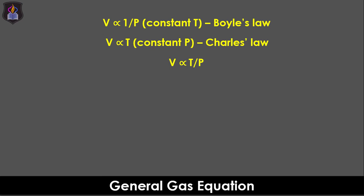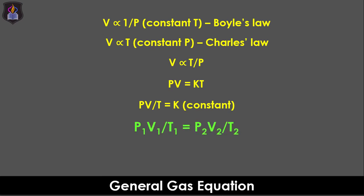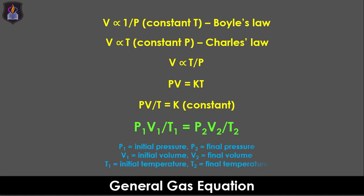When we introduce a proportionality constant, the combined law becomes PV equals kT. Rearrangement of the above equation shows that the ratio of the product of the volume and pressure of the gas to its temperature is constant. Hence, at two different conditions: P1V1 over T1 equals P2V2 over T2.